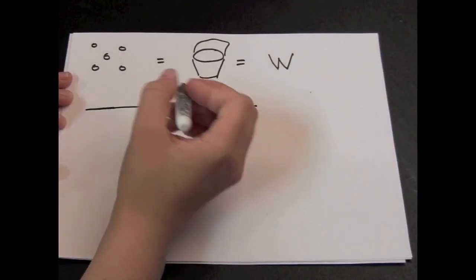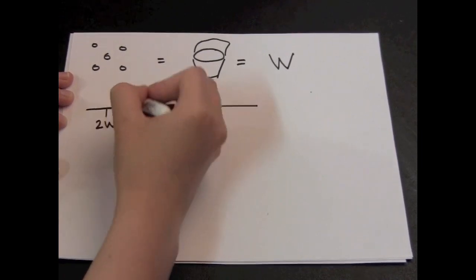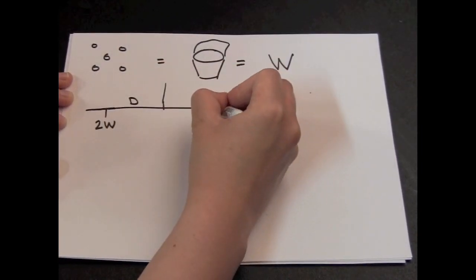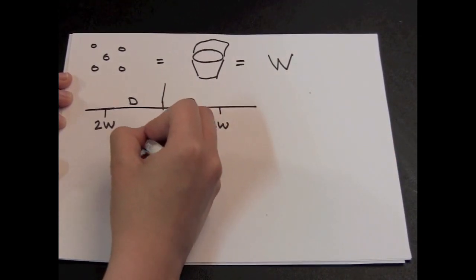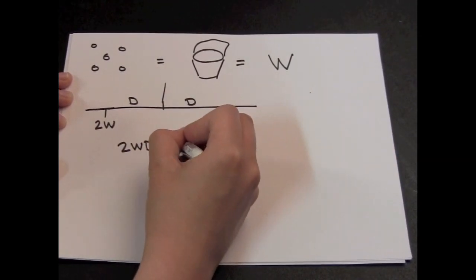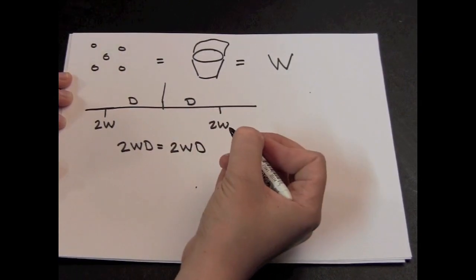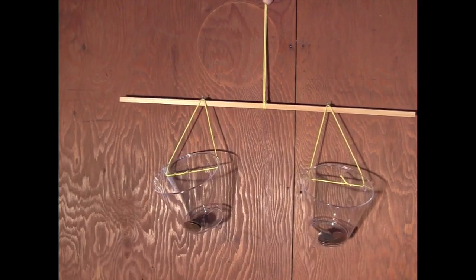Started off with weights 2W, one cup plus five coins, hung on each side, distance I'll call D from the middle. And I got it balanced. And the torques, 2 times W times D, are equal on both sides, and it balances.